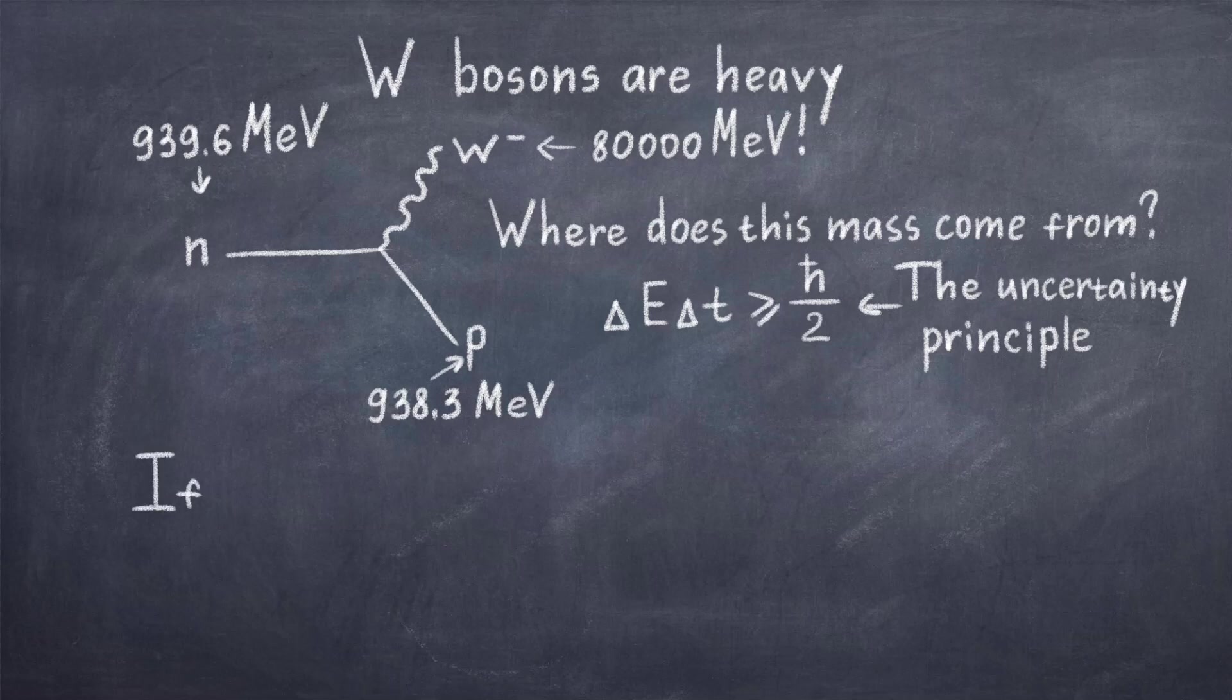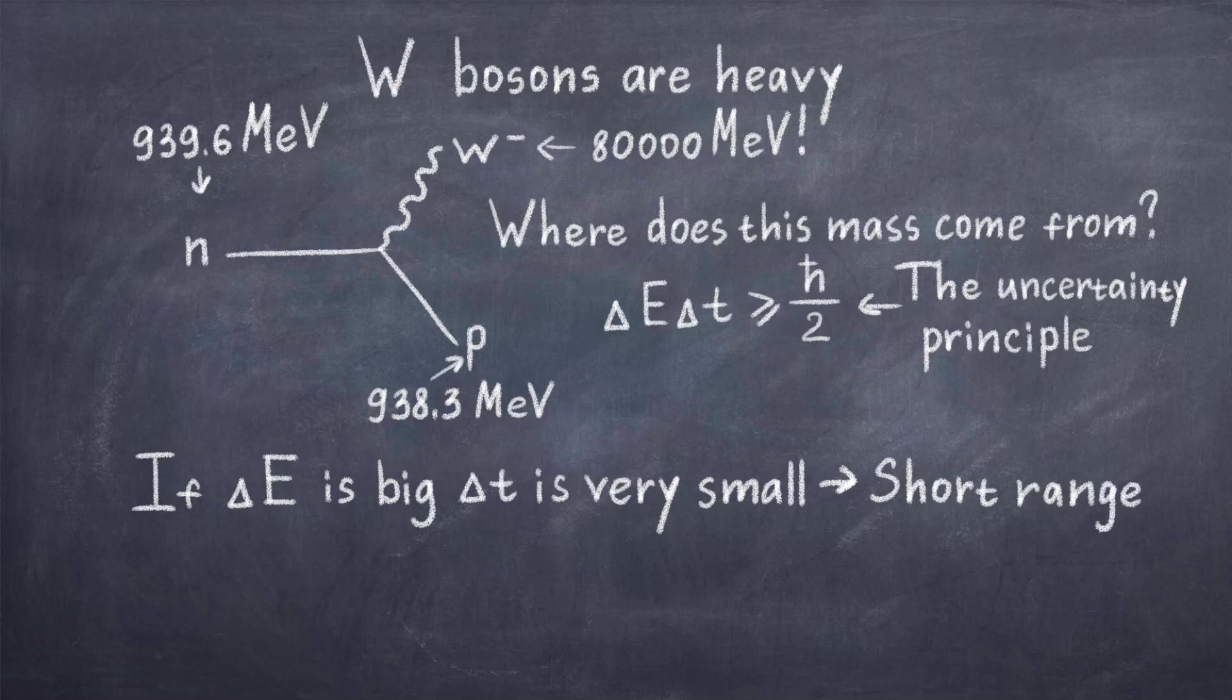So we see that in order to satisfy the uncertainty principle, the W boson must borrow a lot of energy in a very small time delta T. Since the speed of light is the limit of how fast particles can move, we can see that if the particle can only live for some very short time delta T, then obviously it cannot travel very far.